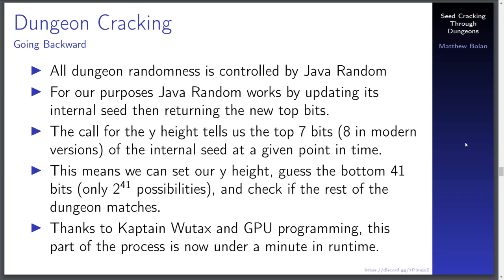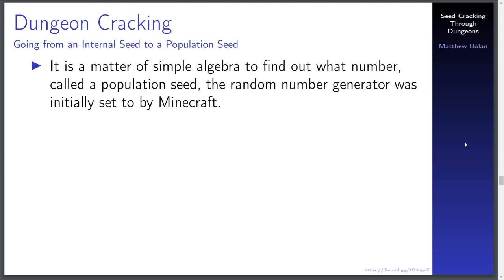But that's not the end of the story. The next trick is that we need to get from that internal seed — buried deep in the sequence of Java Random calls needed to generate everything in Minecraft — back to what Minecraft set the random number generator to, and then back further to the actual world seed. We'll break that down into stages. First, we have the internal seed at the time the game figured out the dungeon's Y height, and we've got to go back to the population seed. Because Java Random is just multiplying, chopping, and adding each time, the algebra to go back to what the random number generator was initially set to is actually pretty simple.